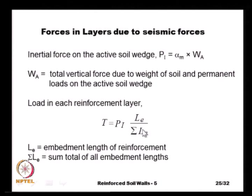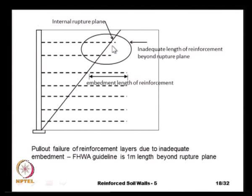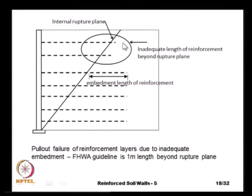The reinforcement load T in a particular layer is the total inertial force P_i multiplied by L_e divided by the sum total of all embedment lengths. This means that reinforcement layers at the bottom of the wall carry higher inertial loads because they have much higher embedment lengths compared to the layers at the top, where the embedment length beyond the rupture surface is shorter.